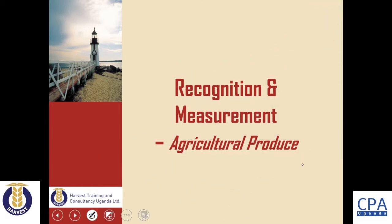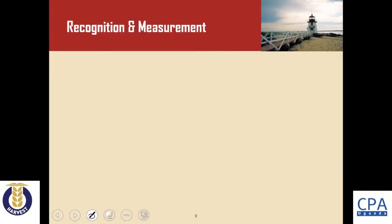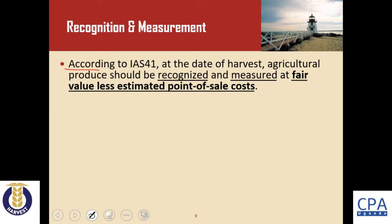Looking at recognition and measurement for agricultural produce as given in IAS 41: at the date of harvest, agricultural produce should be recognized and measured at fair value less estimated point-of-sale costs. Since fair value changes over time, the fair value is determined at the point of harvest.